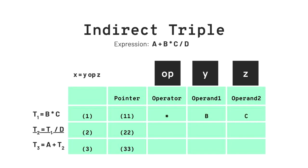For the second code t2 = t1 / d: the operator is slash, operand1 is the pointer to the first line of code, that is 11, and operand2 is d. For the third line of code t3 = a + t2: the operator is plus, operand1 is a, and operand2 is the pointer that holds the value of the second line of code, that is 22. And the indirect triple table is complete.